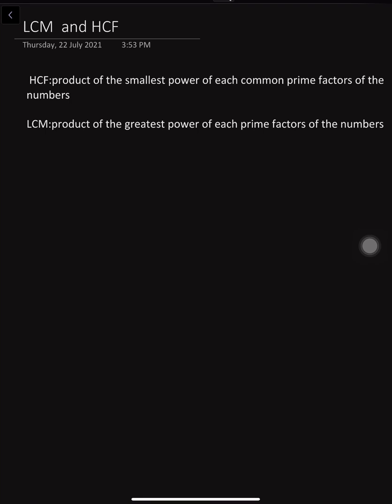LCM means least common multiple. HCF is highest common factor. First, you write the prime factorization of the given numbers. After that, you find HCF and LCM from the prime factorization. For this, HCF is the product of the smallest power of each common prime factor of the numbers. LCM is the product of the greatest power of each prime factor of the numbers.